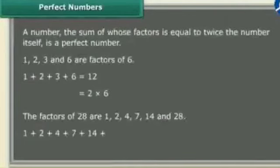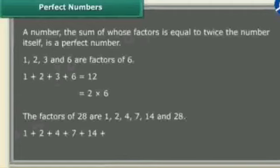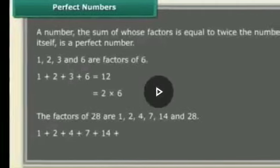Next is the concept of a perfect number. What is a perfect number? A number whose sum of all its factors is equal to twice the number itself is called a perfect number. We will understand this from an example.